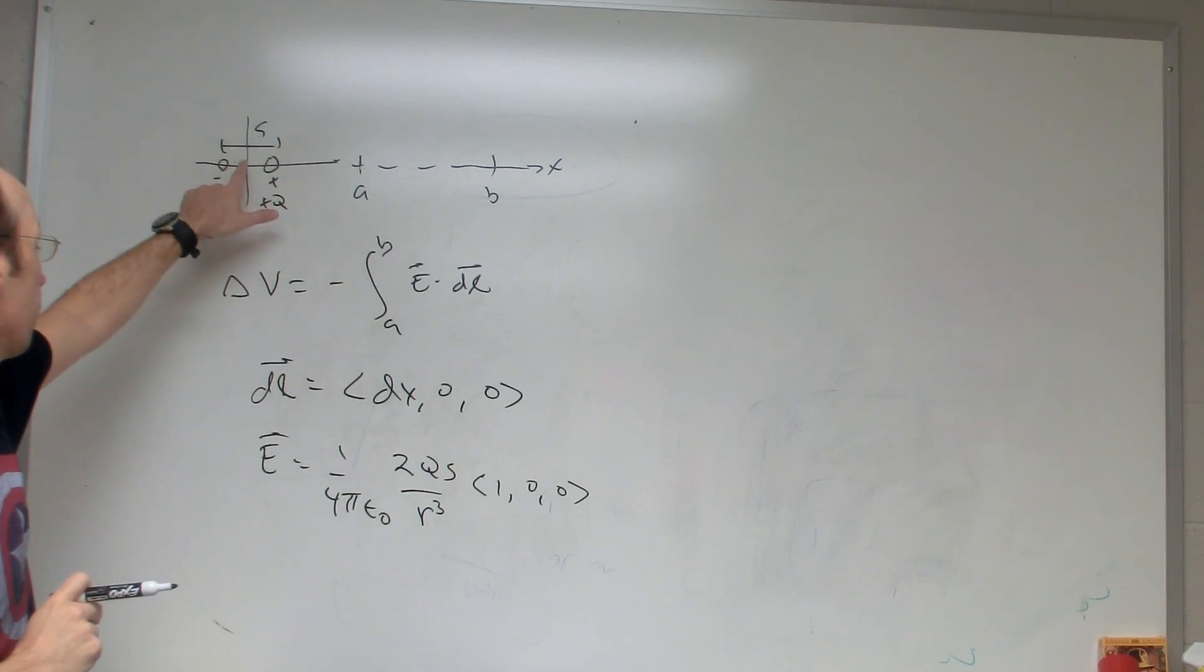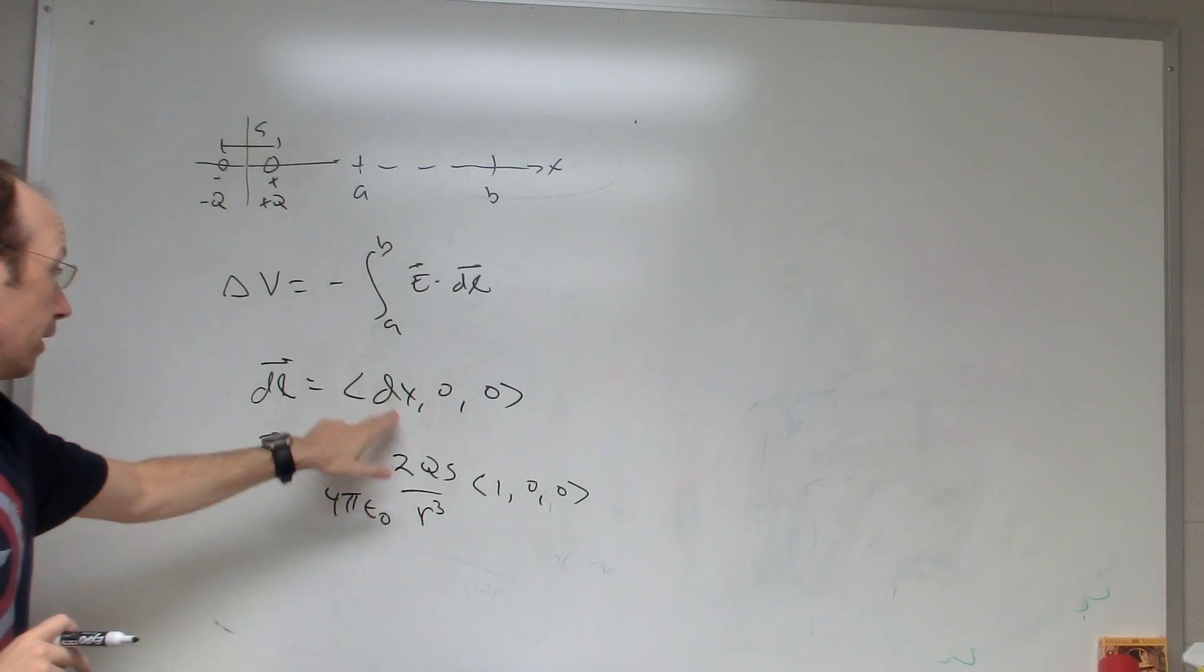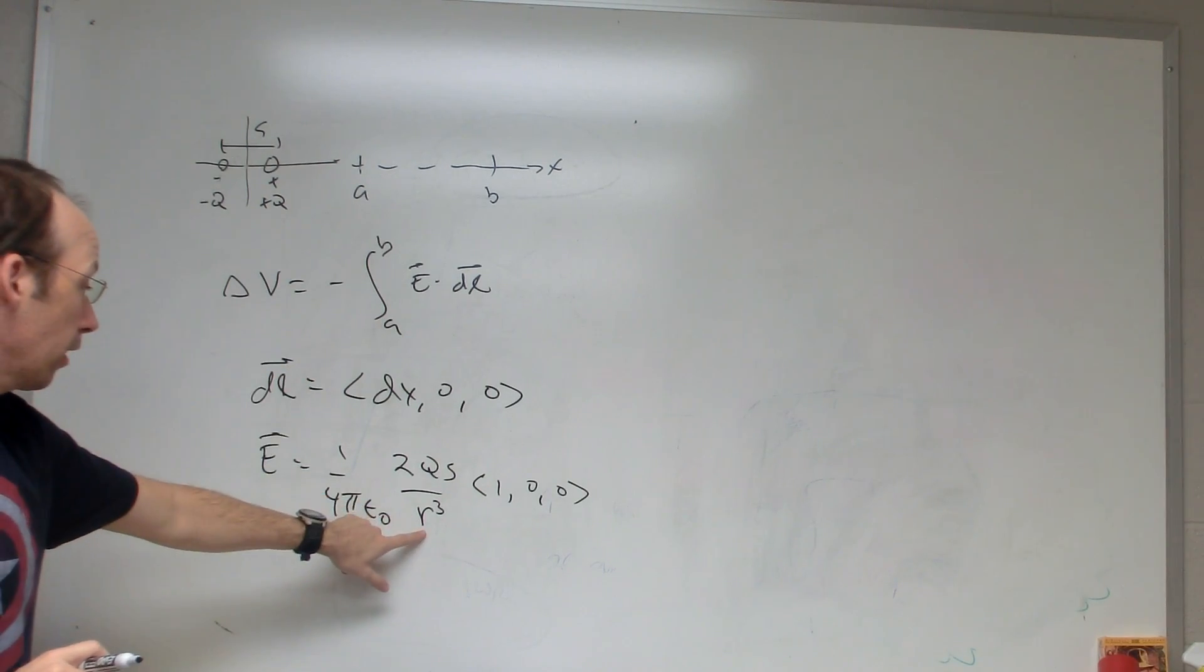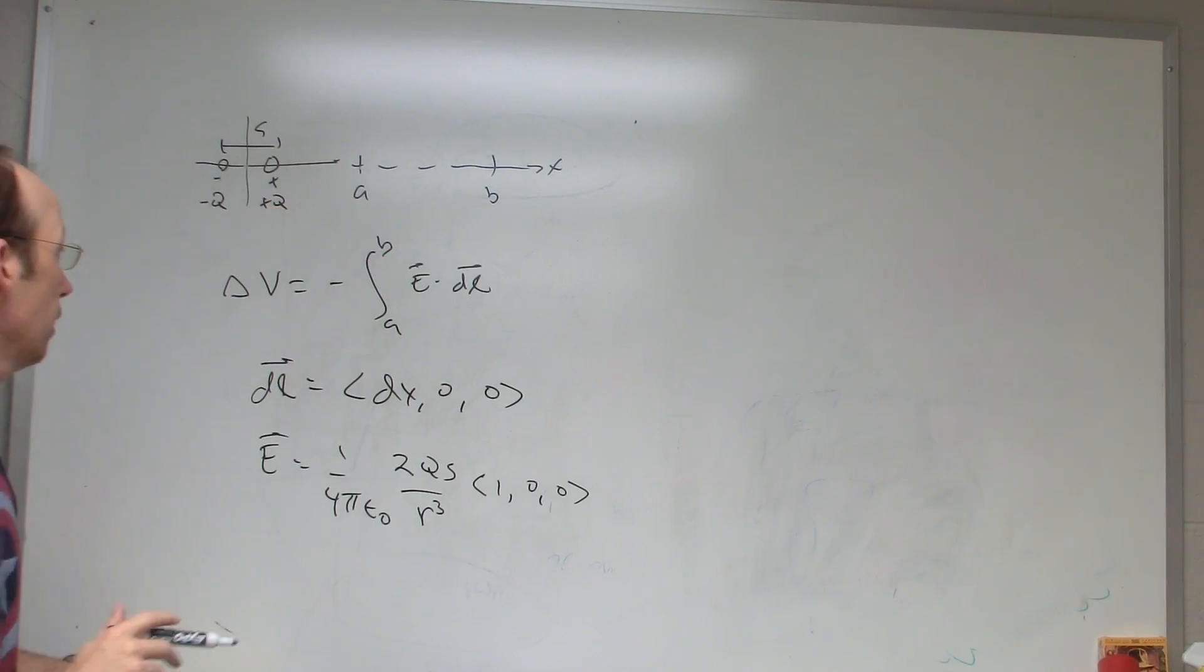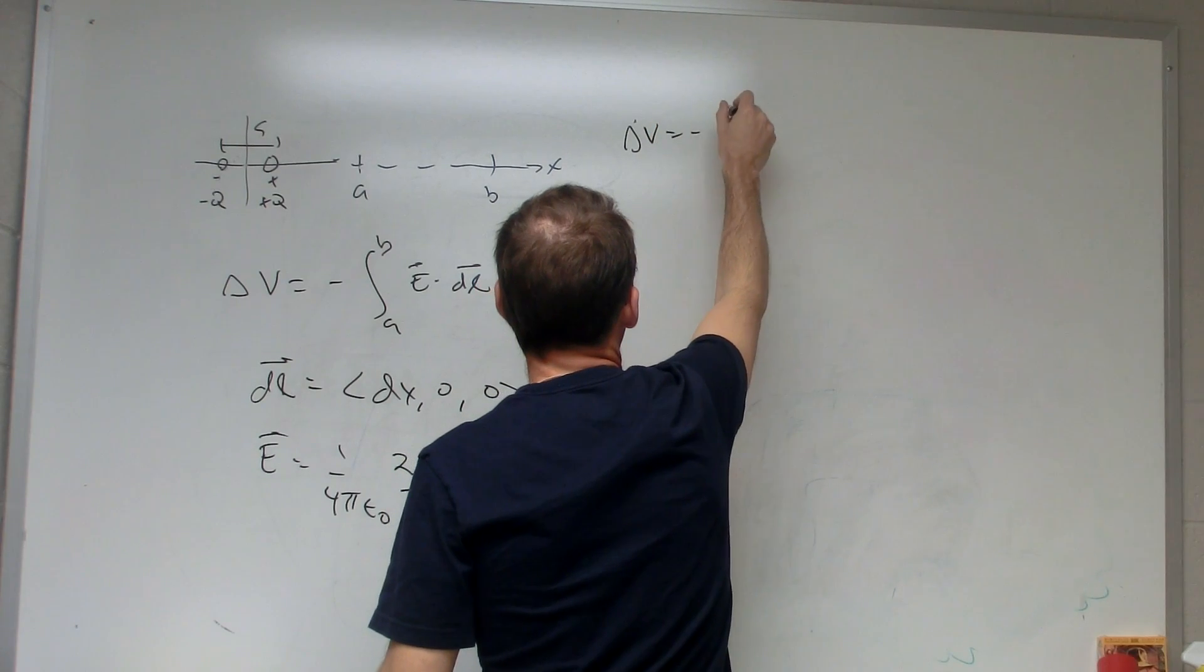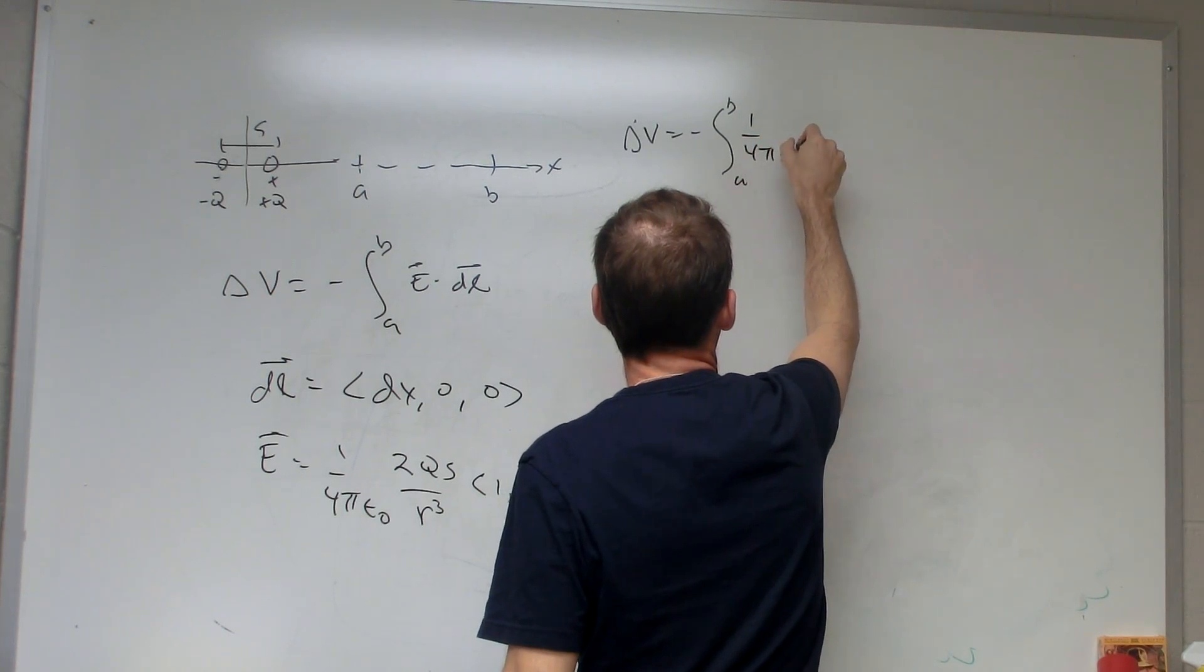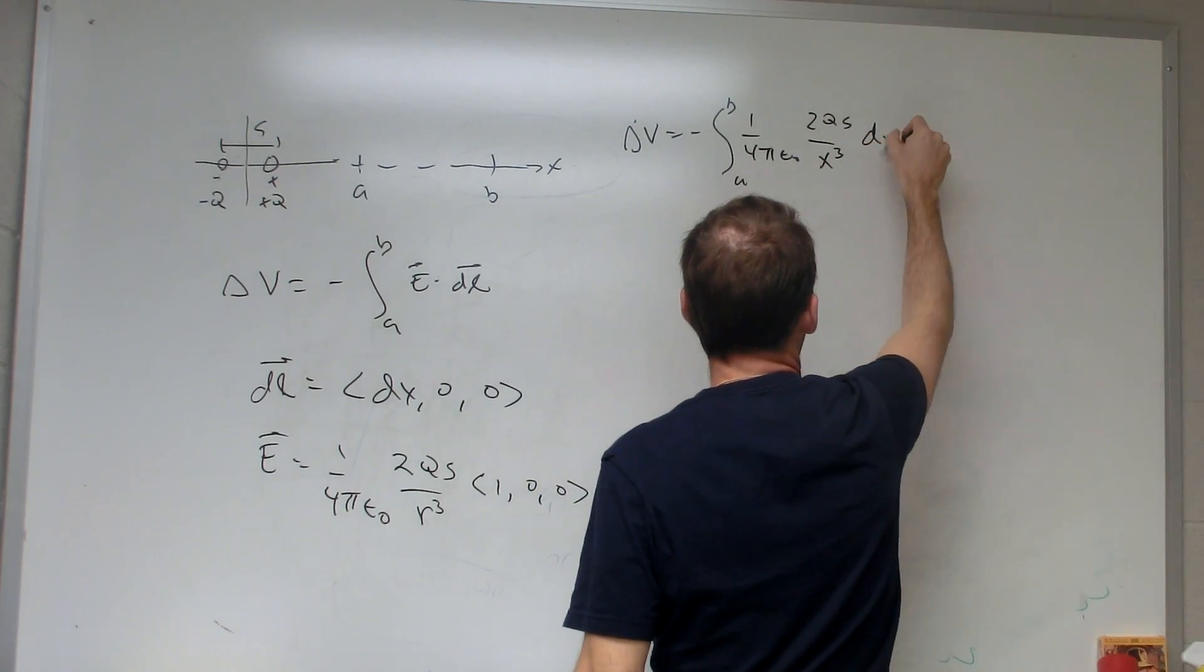So r is the distance between the center of the dipole and the point of location. So when I do this dot product, the only thing that I get is the x components. That's the only thing that survives. So this integral, if I'm going to call this now x, okay, because we're in the x direction, then my integral becomes delta v equals negative the integral from a to b. E x is just going to be this 1 over 4 pi epsilon 0, 2 Qs over x cubed dx.